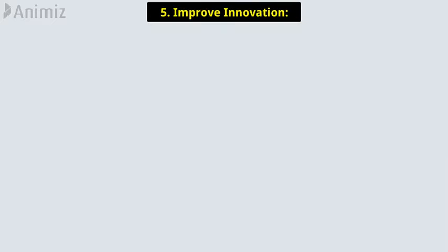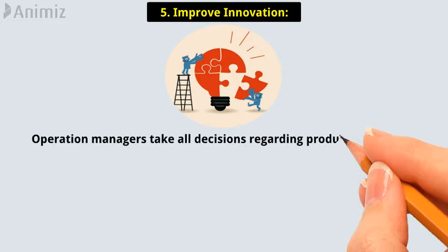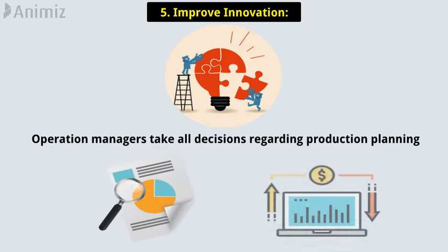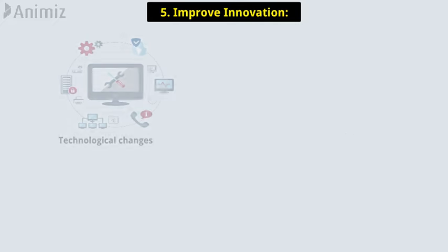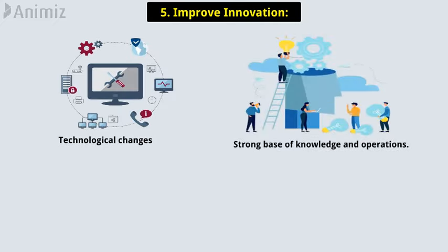5. Improve Innovation. Operation management implements innovative changes in organizational activities. Operation managers take all decisions regarding production planning, by conducting research and study of overcoming market conditions. It considers all technological changes and develops a strong base of knowledge and operations.